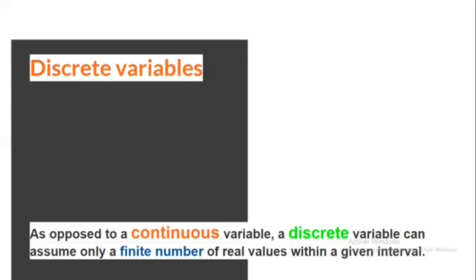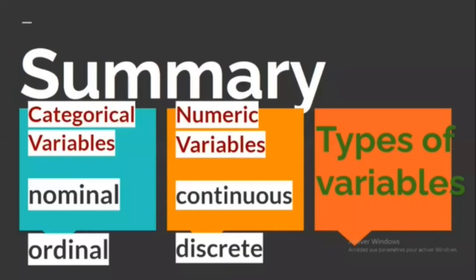In summary, we have two types of variables: (1) categorical variables, which are divided into nominal and ordinal, and (2) numeric variables, which are divided into continuous and discrete.